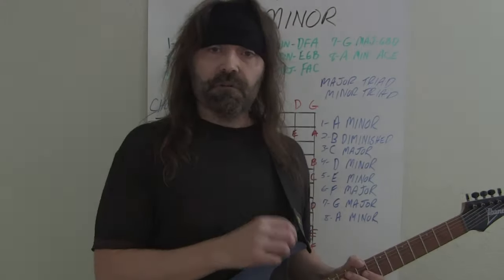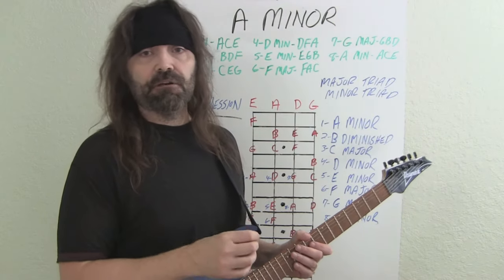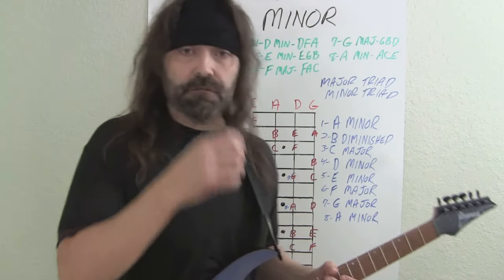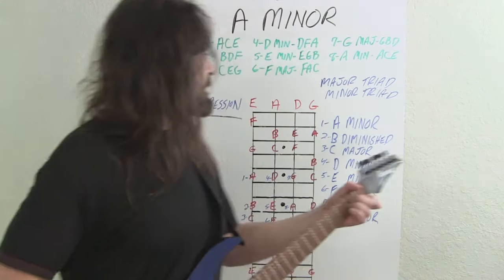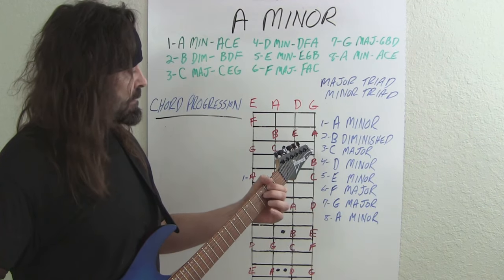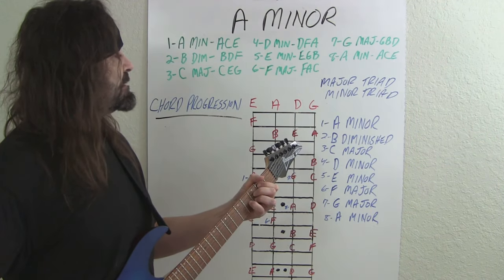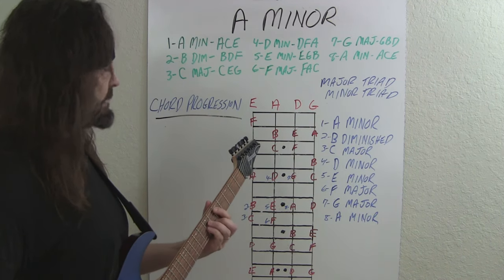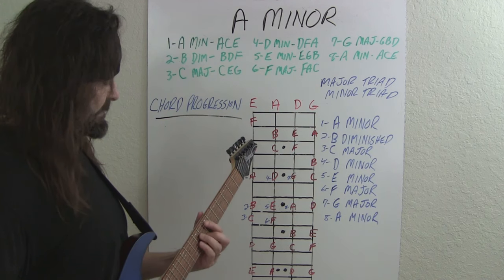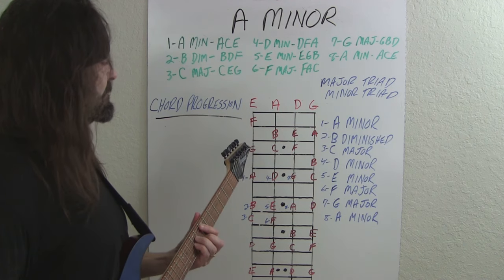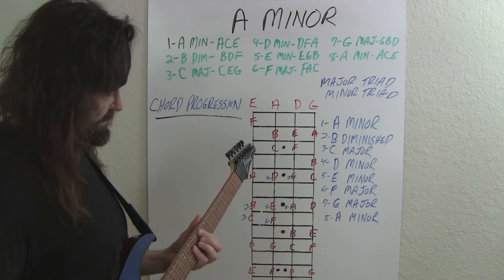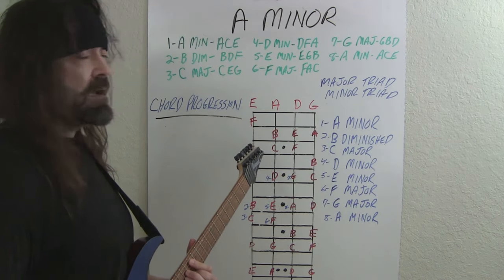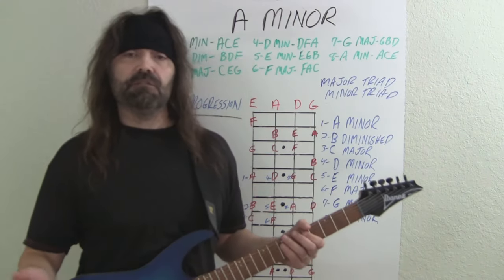I moved over to guitar because I want you to hear what the corresponding chords in A minor sound like. So we have: A minor, then B diminished, then C major, then D minor, then E minor, then F major, then G major, and then we're back to A minor.